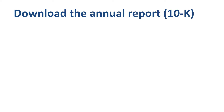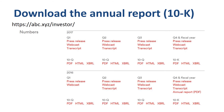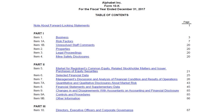In order to analyze the cash flow statement, you need to download the annual report. In the case of Alphabet Inc., go to abc.xyz/investor and download the 10-K PDF version. Scroll down the table of contents of the 10-K annual report to Item 8, Financial Statements and Supplementary Data, and click on the link.